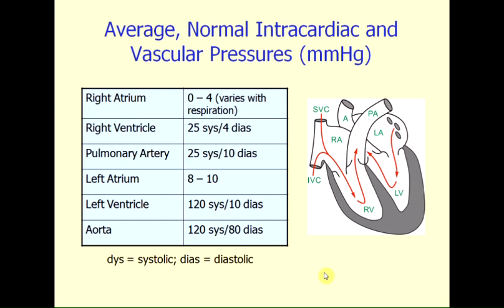This final slide summarizes the average normal intracardiac and vascular pressures found in the heart. The right atrial pressures typically vary between 0 and 4 millimeters of mercury. It's not constant because it varies with respiration — when a person takes a breath in, the pressure falls, and as you take a breath out, the pressure will rise a few millimeters of mercury.